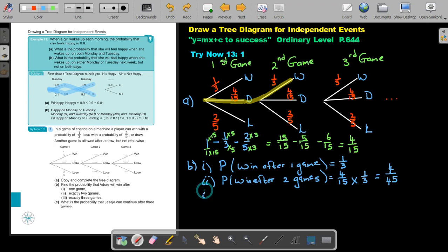In this next one, the third one, the probability win after three games. The probability of that will be, it's just that extra 4 over 15 multiply 4 over 15, and then the winning 1 over 3. That will give me a final answer of 16 over 675.